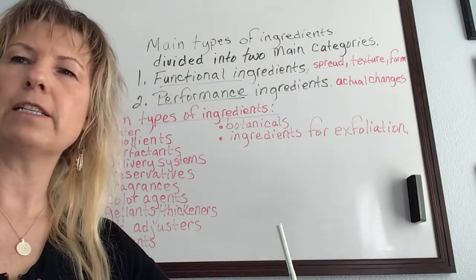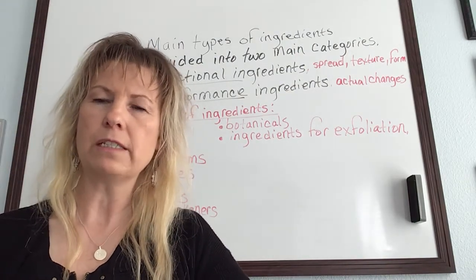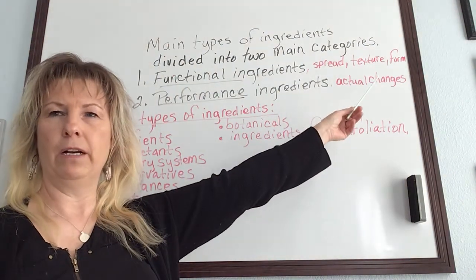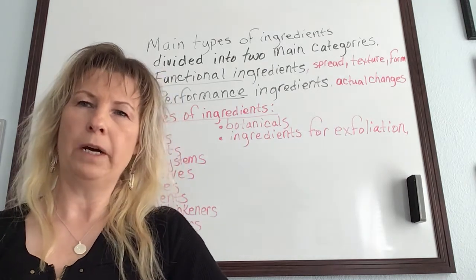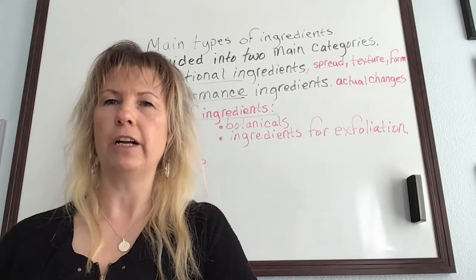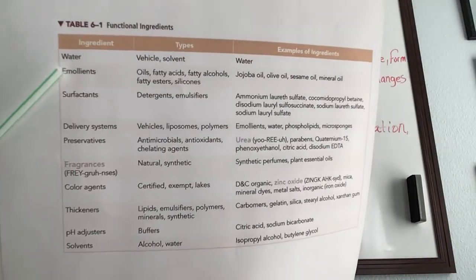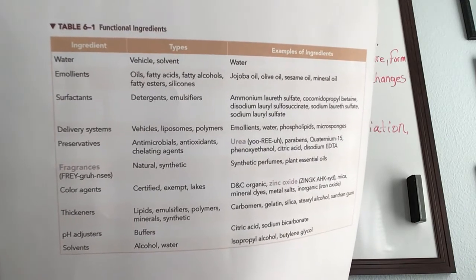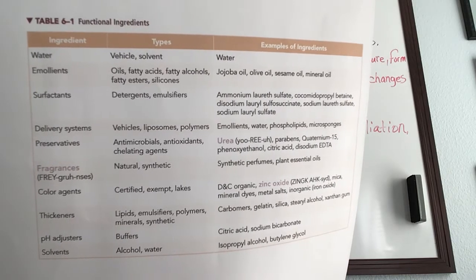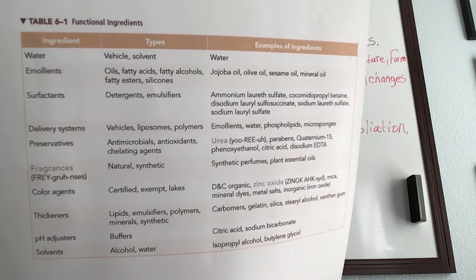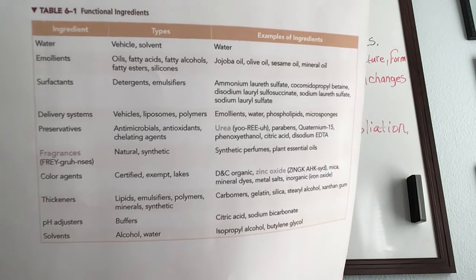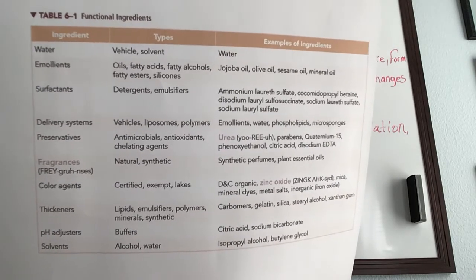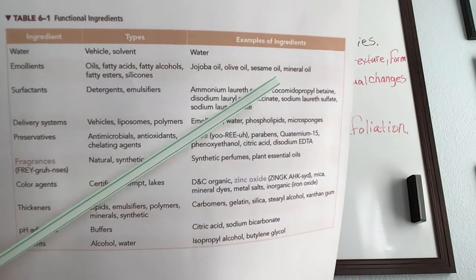Functional ingredients do not affect the appearance of your skin, but they're very necessary in product formulation. They can act as a vehicle, which means they allow products to spread, give them body and texture, and also give products a specific form, like a lotion, cream, or gel. Looking at the chart: water is a vehicle or solvent. Emollients are oils, fatty acids, fatty alcohols, fatty esters, and silicones — examples include jojoba oil, olive oil, sesame oil, and mineral oil.